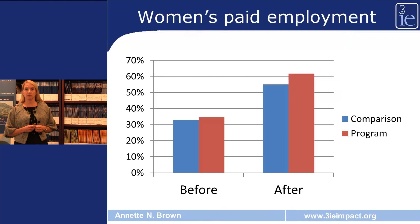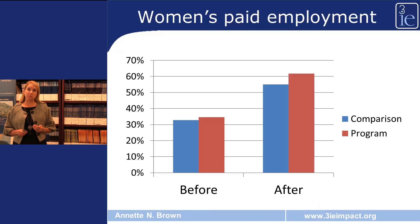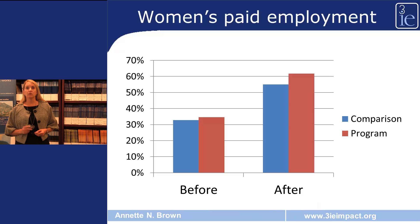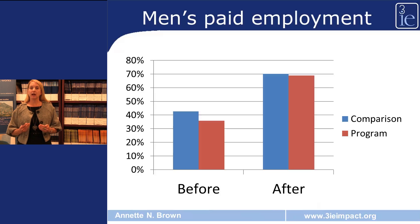Let's look at the results. For women, there was a program group and a comparison group. Before the intervention, the labor force participation rate in paid employment of these women was roughly the same. But after the intervention, the women who were in the program had a higher rate of paid employment. For the men, things are a little different. Before the program, the program group and comparison group had slightly different levels of paid employment, and after the program they had similar levels.